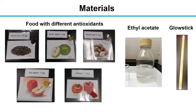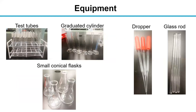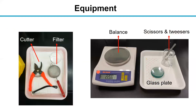Now we introduce the materials used in the experiment. We will use foods with different antioxidants such as green tea, apple, mushroom, and pepper. We will also use ethyl acetate and glow sticks. Some glassware will also be used such as test tubes, a graduated cylinder, small conical flasks, a dropper, and a glass rod. Besides, we also use a cutter, filter, balance, scissors, and tweezers.